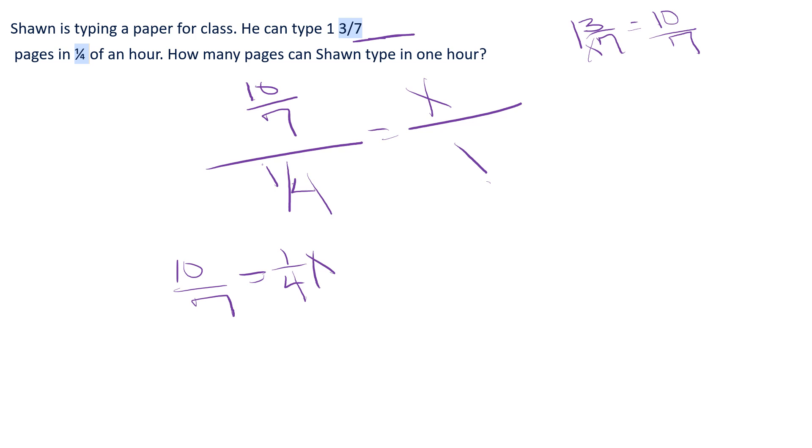Then I'm going to figure out how I can get 1/4 times x away from it. I can divide both sides by 1/4, which is the same as multiplying by 4. So if I multiply by 4 on this side, it goes away. If I multiply by 4 over here, I get 4 times 10 is 40, over 7. And I can simplify that.